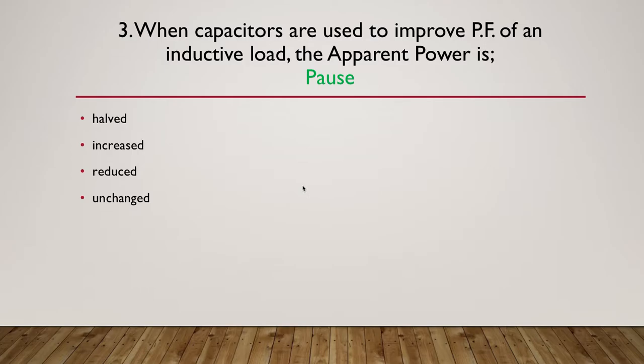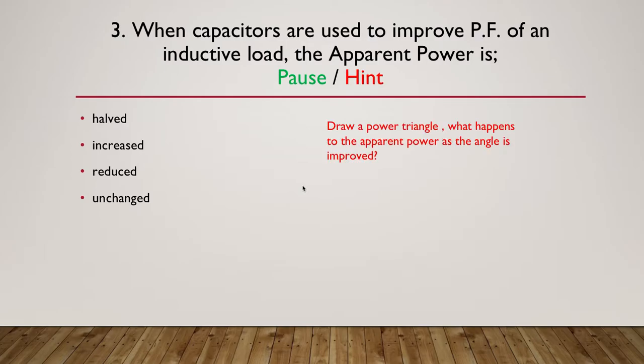Here's our hint: draw the power triangle. What happens to the apparent power as the angle is improved? Think about the power triangle and what happens to the angle when it's improved.